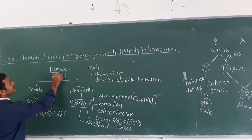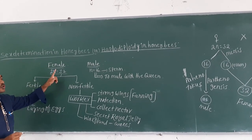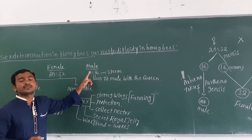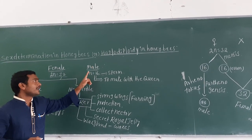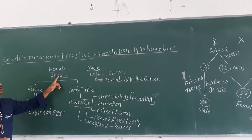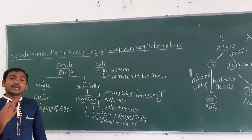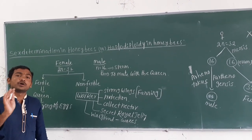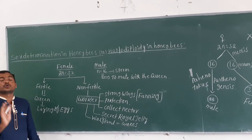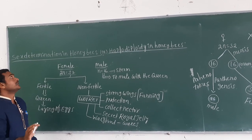Females consist of 32 chromosomes, but males have only 16 chromosomes. For comparison, in human beings both males and females have 46 chromosomes, or 23 pairs of chromosomes.